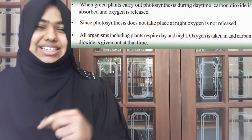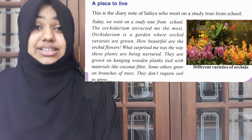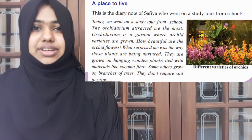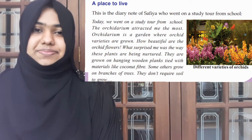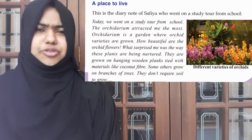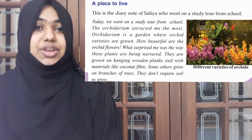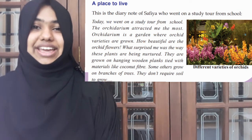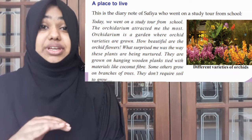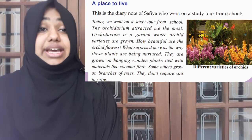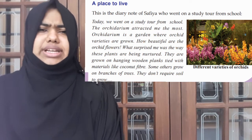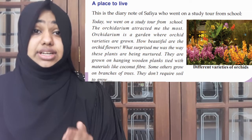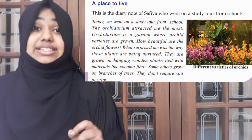Now we are going to the next topic: A Place to Live. Where do we live? We live on our earth. Do you all write diaries? Some of you might, some might not — it is a very nice hobby. You can write down what all happened in your day. A book in which we write what happened in our daily lives is called a diary. Now let us see the diary writing of Sefya, a student like you — she went on a study tour from school and is writing her experience.